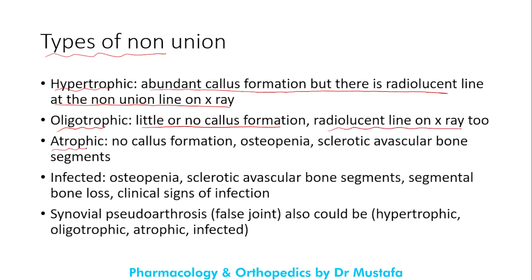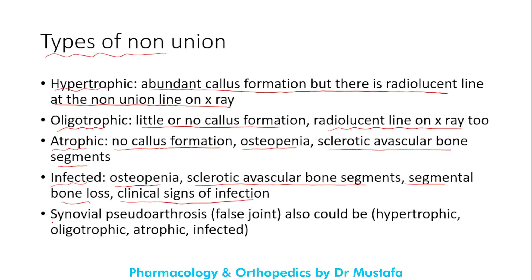Atrophic non-union is when there is no callus formation whatsoever; there is osteopenia and sclerotic avascular bone segments seen on X-ray. Infected non-union is when there is infection to the bone fragments; on X-ray we see osteopenia, sclerotic avascular bone segments, segmental bone loss, and clinical signs of infection.